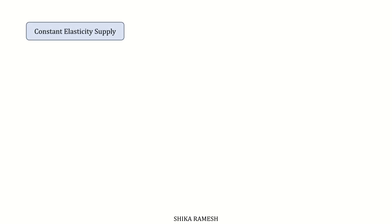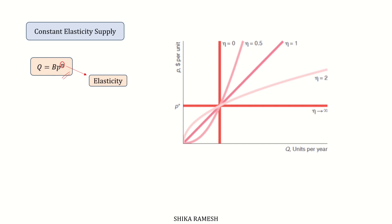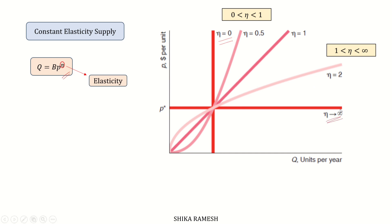Similar to constant elasticity demand curves, we have constant elasticity supply curves, wherein the supply elasticity does not vary along the constant elasticity supply functions, which are exponential of the form q = b · p^η. If η lies between 1 and infinity, the supply curve will start at the origin and be concave to the horizontal axis. If η lies between 0 and 1, the supply curve will be convex to the horizontal axis. The two extreme cases are the vertical supply curve with zero elasticity and the horizontal supply curve with elasticity equal to infinity.